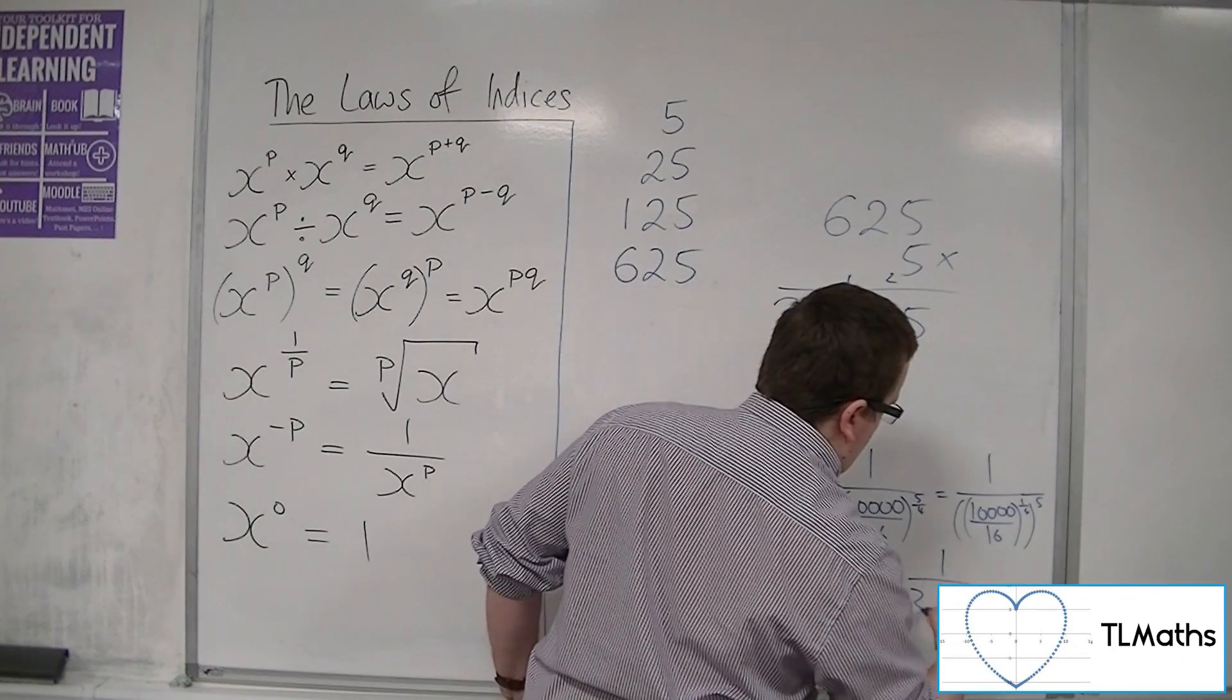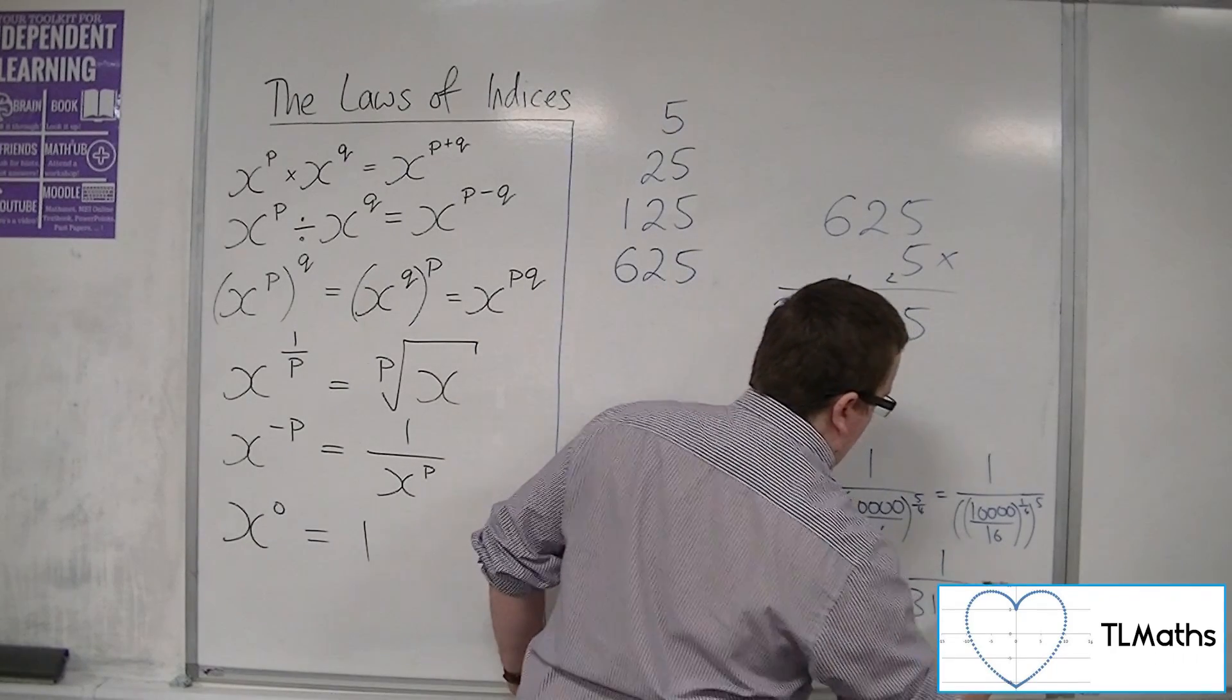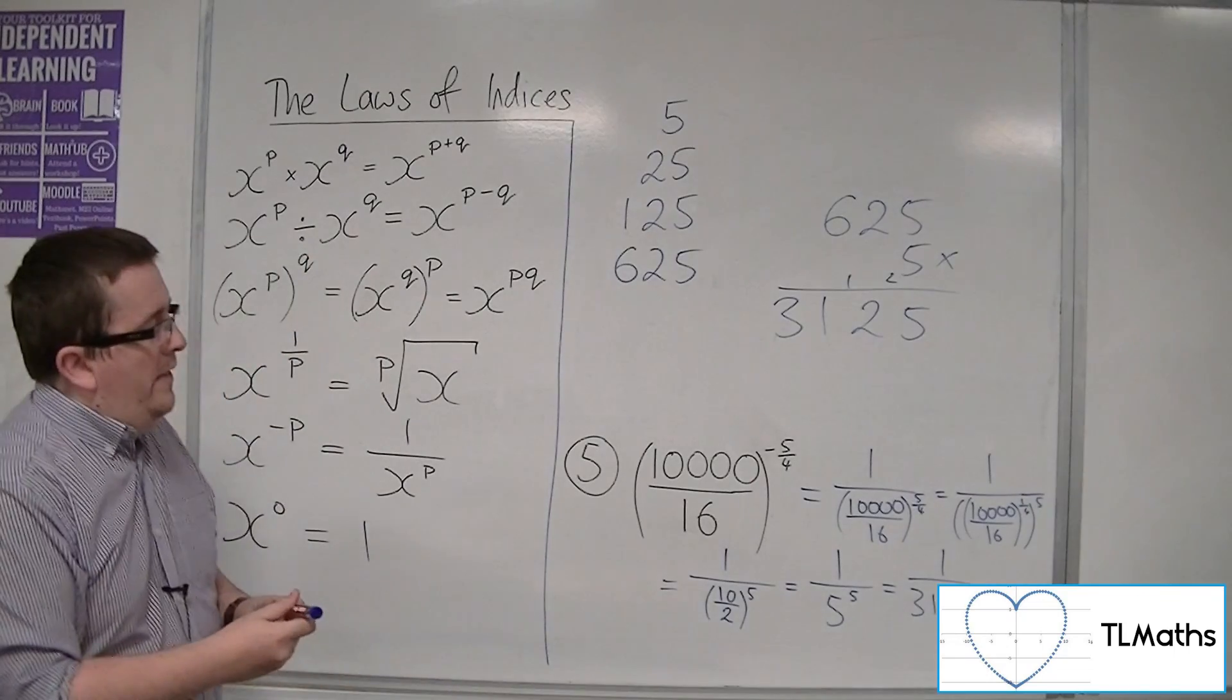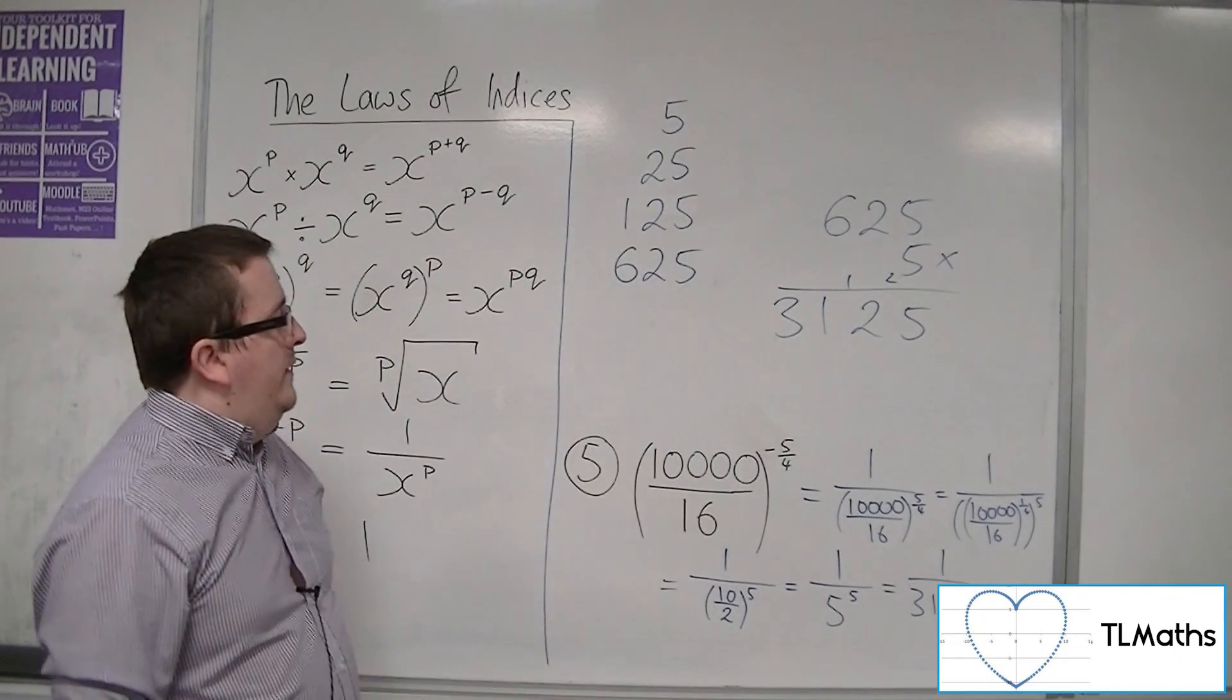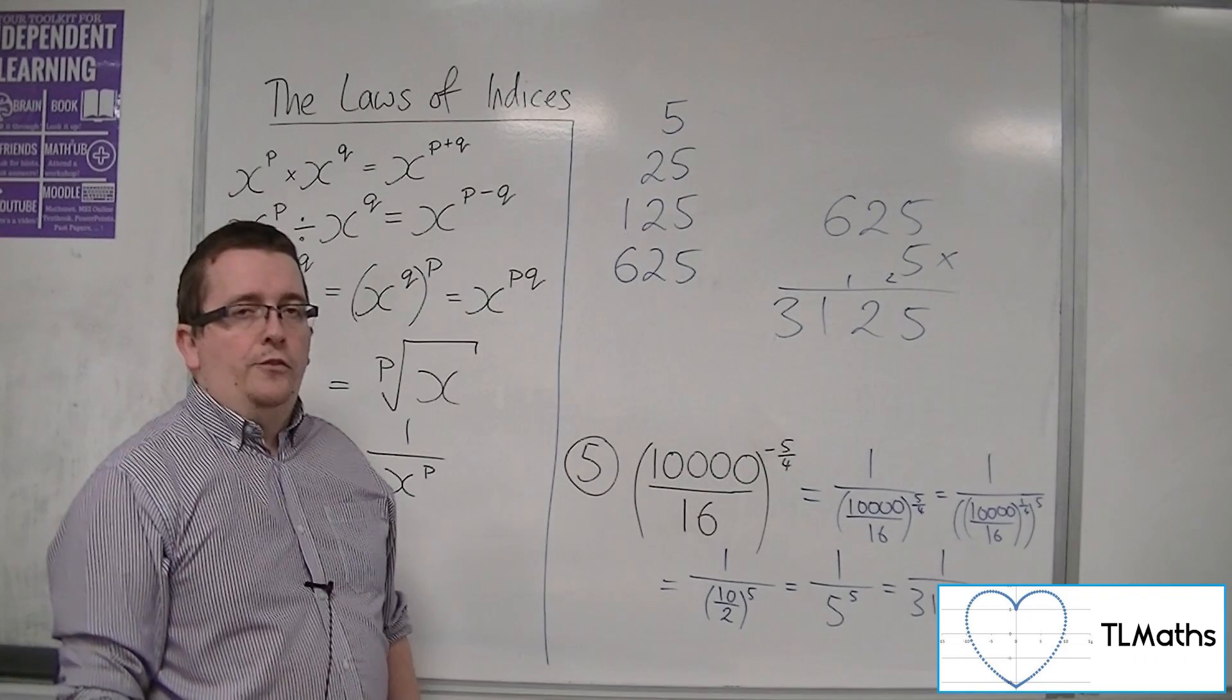So there's 1 over 3125. And that is equal to the 10,000 over 16 to the minus 5 quarters.